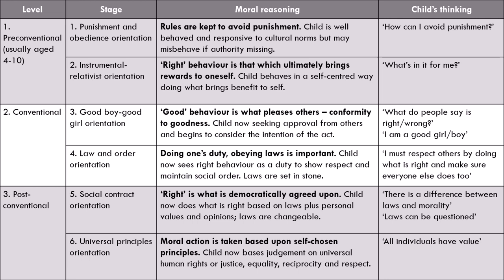Level two is the conventional level, containing stages three and four. Stage three is the good boy, good girl orientation. Children believe that good behaviour is what pleases others, so they're conforming to the idea of goodness. The child is looking for approval from others and will begin to consider the intention of the act — did you mean to do well? In this stage they're thinking: 'What do people say is right and wrong? I'll do things which would make people say that I am a good girl or a good boy.'